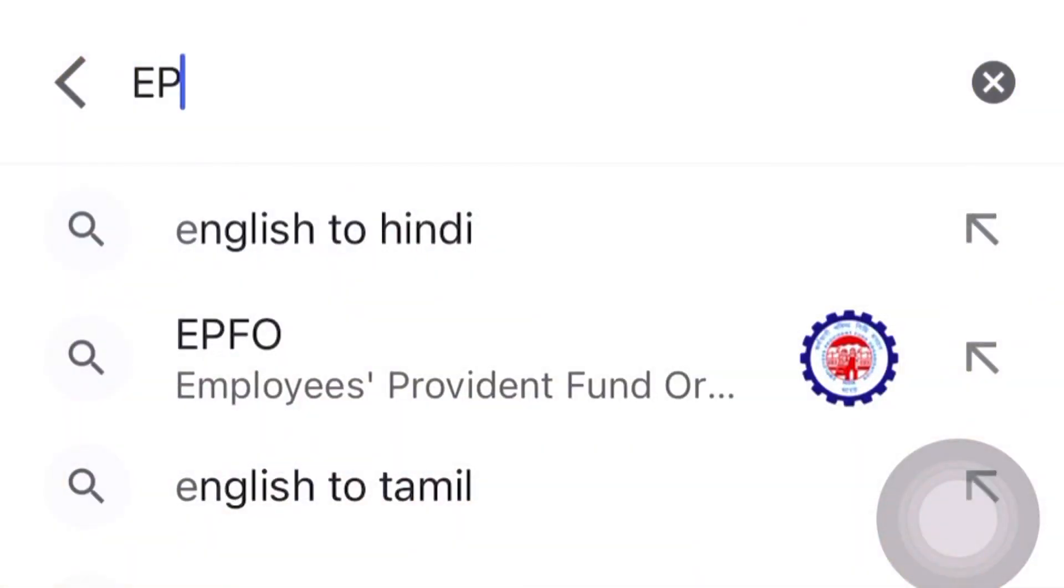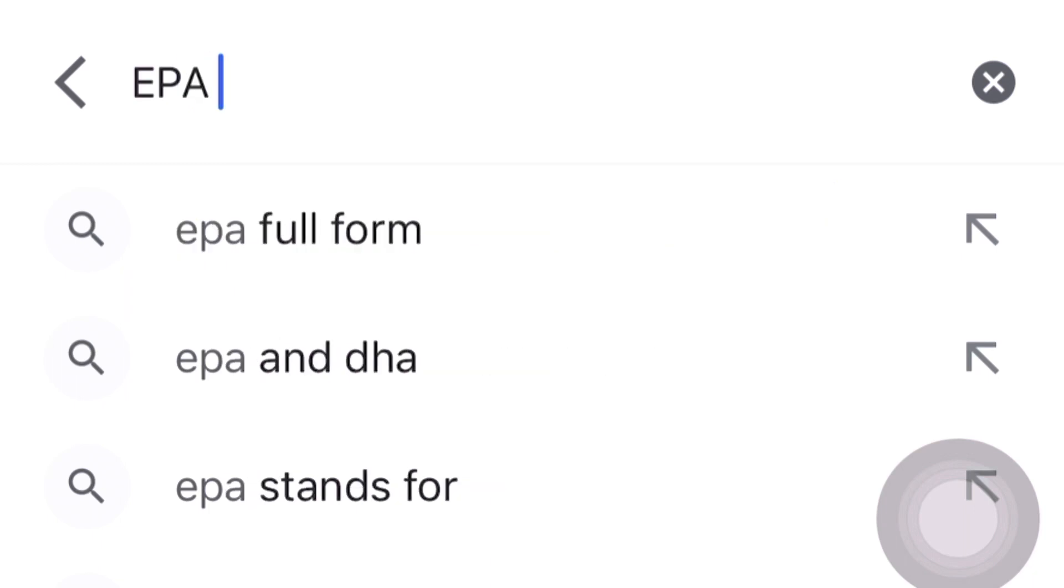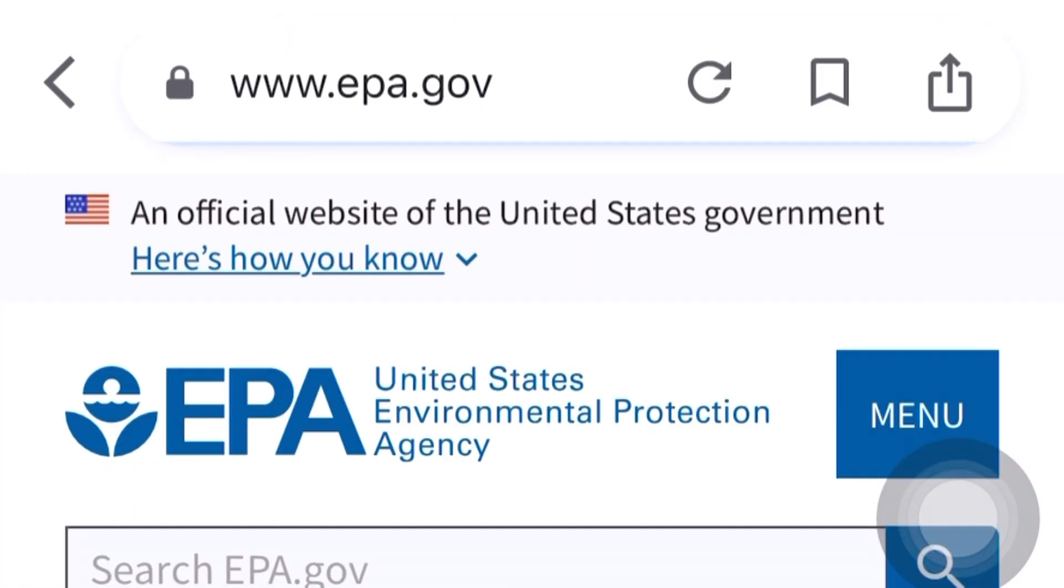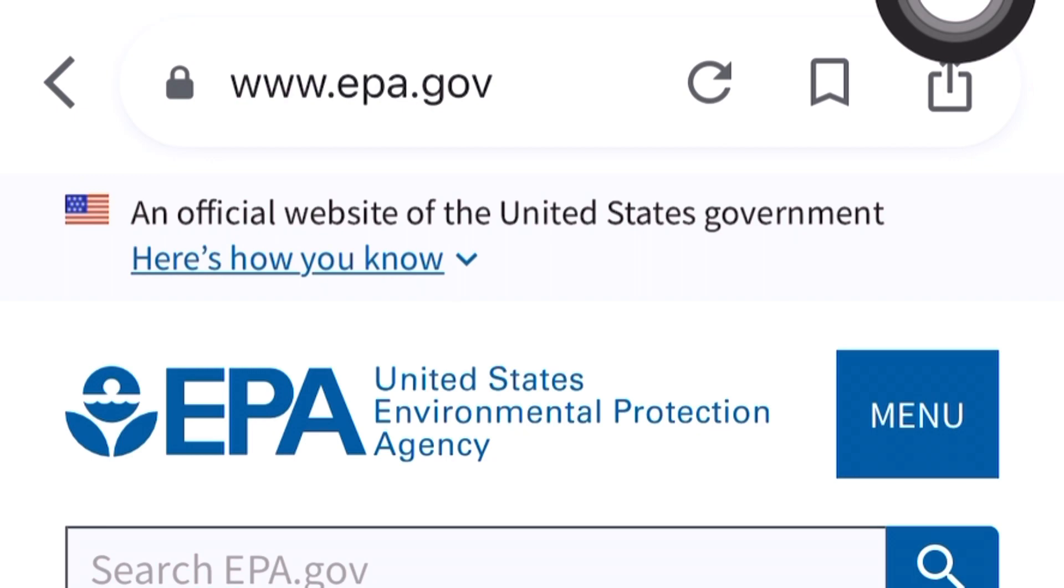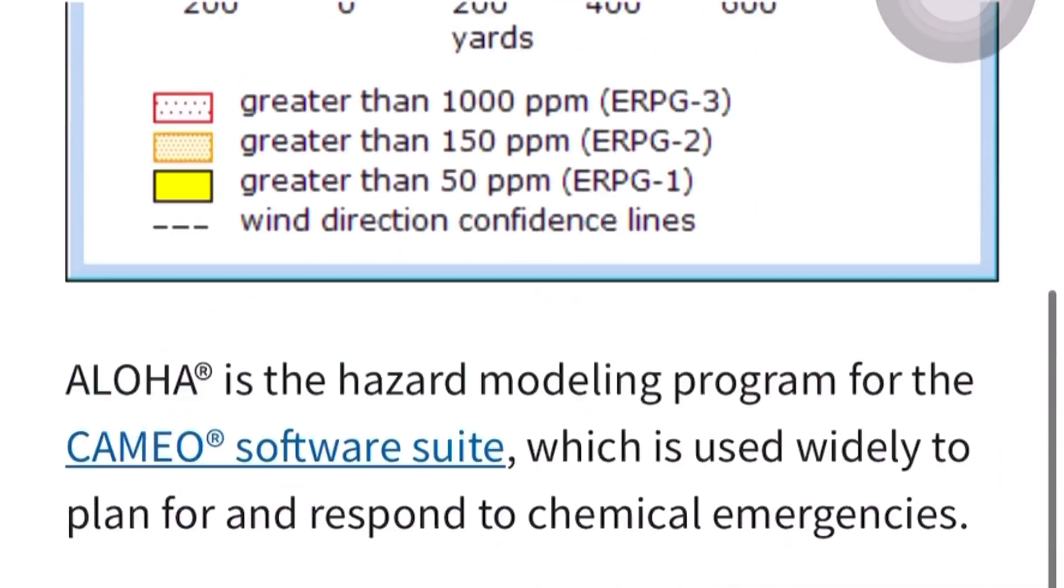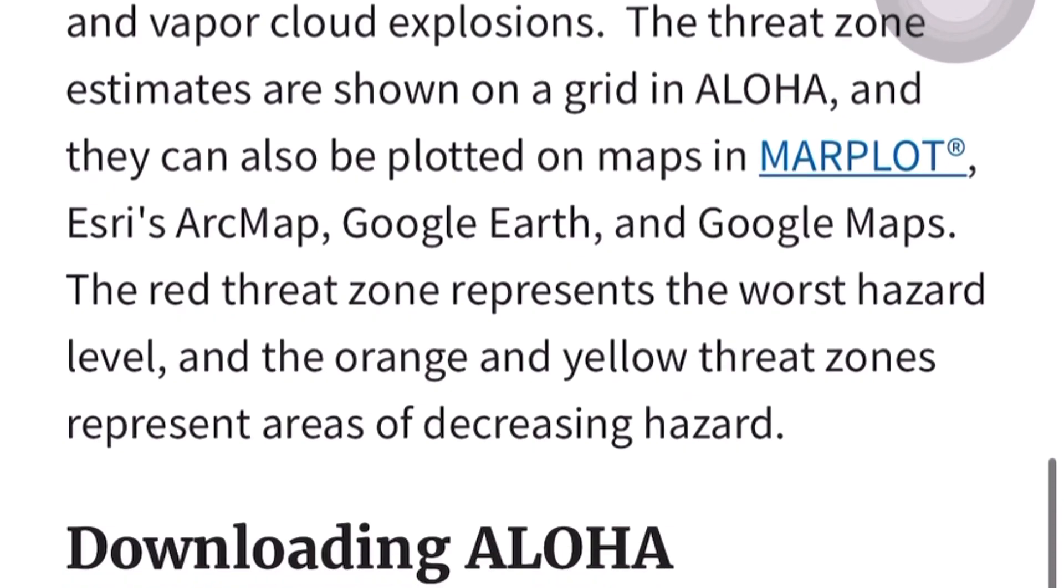To download this software, type EPA Aloha. It will take you to the Environment Protection Agency of USA, the first website which you can see. Just click it, open it, and on this page scroll down. You will be finding the link of downloading the Aloha software.